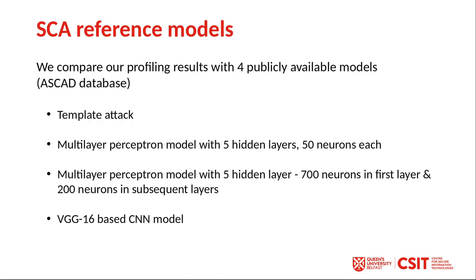To understand the effectiveness of our proposed CNNP model, we compare our profiling results with four publicly available models in the ASCAD database: a template attack, a multilayer perceptron model with five hidden layers and 50 neurons each, a multilayer perceptron model with five hidden layers and 200 neurons each, and a VGG16-based CNN model. We will go into detailed comparison between the VGG16 model and our models in the next slides.